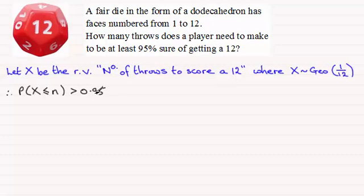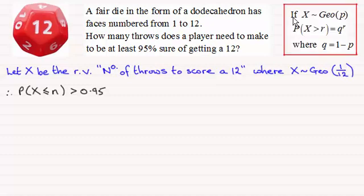To work out this probability, we need to turn to this result that you should already be familiar with. If X is distributed geometrically with parameter p, then the probability of X being greater than r equals q to the power r, where q equals 1 minus p.